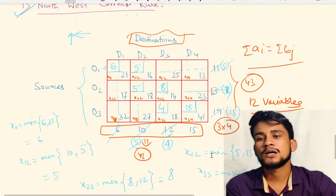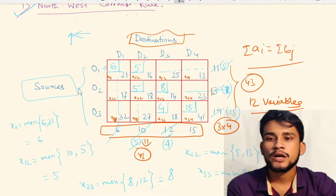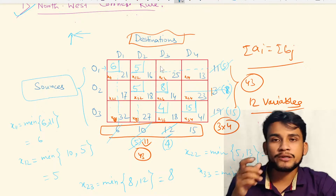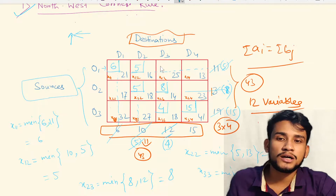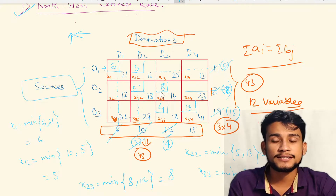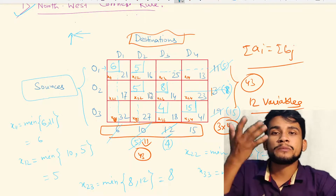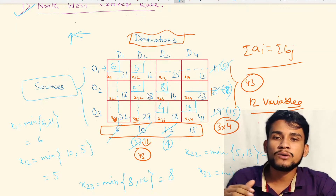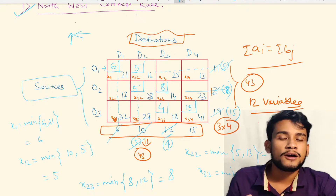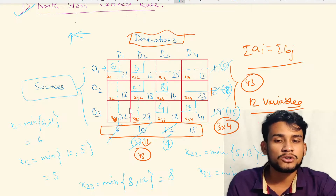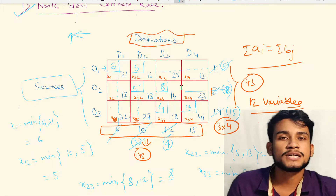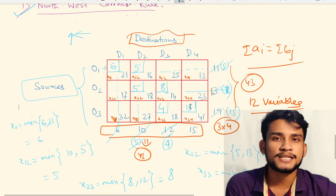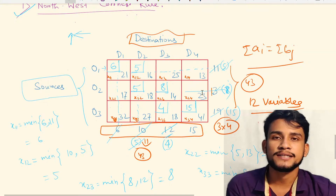This is the transportation cost to transport goods from sources O1, O2, O3 to destinations D1, D2, D3, and D4. The remaining improved methods will be discussed in the next lecture. This was just the initial method. If the content is helpful, please give a like, share with your friends, and subscribe the channel. Thank you, see you in the next video.